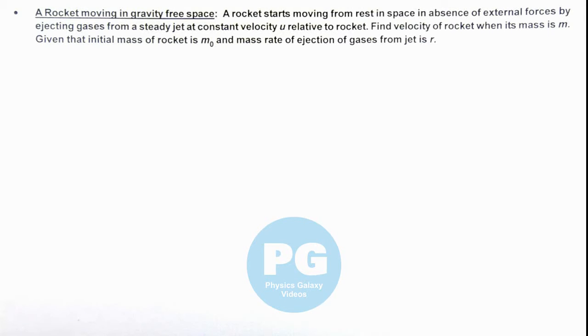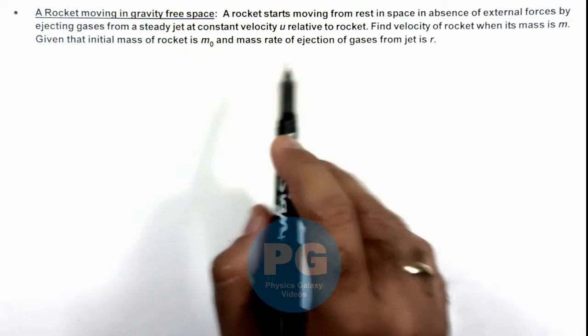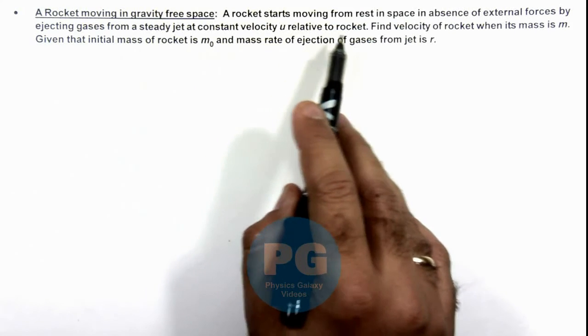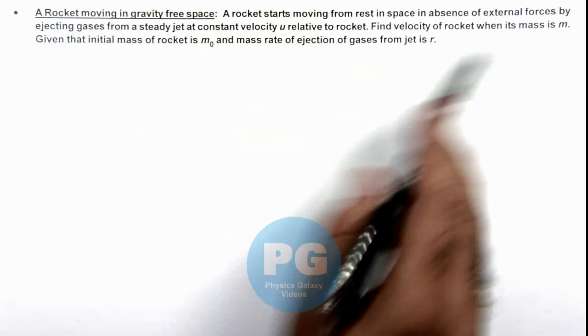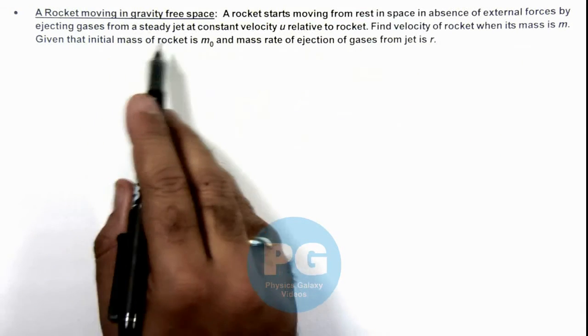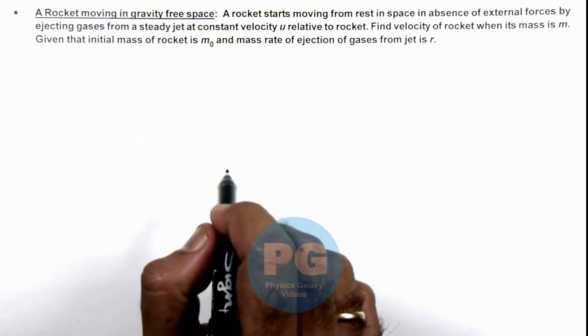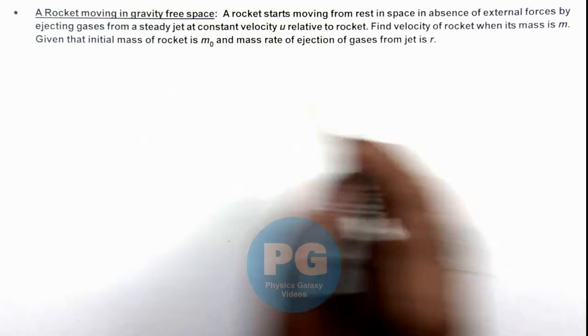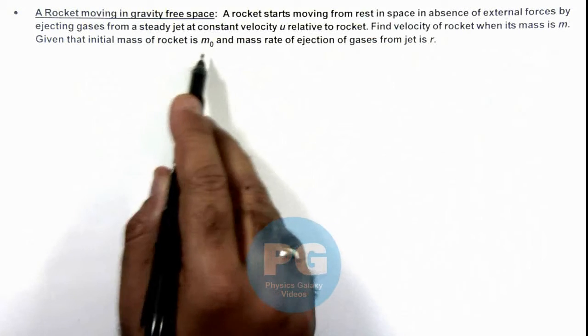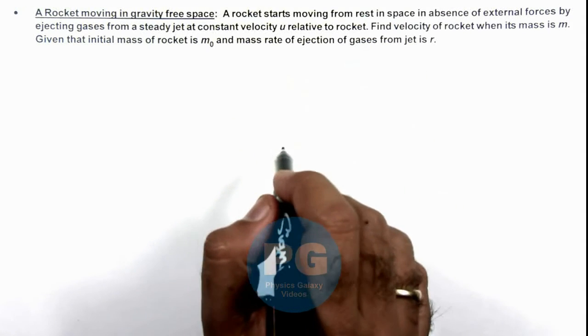In this illustration we'll analyze a rocket moving in gravity free space. Here we are given that a rocket starts moving from rest in space in absence of external forces by ejecting gases from a steady jet at constant velocity u relative to rocket. We are required to find the velocity of rocket when its mass is m, and it is also given that initial mass of rocket is m₀ and ejection rate of gases from the jet is r.